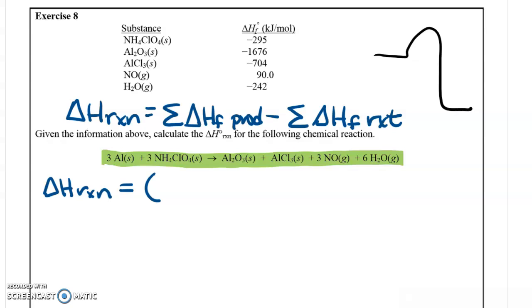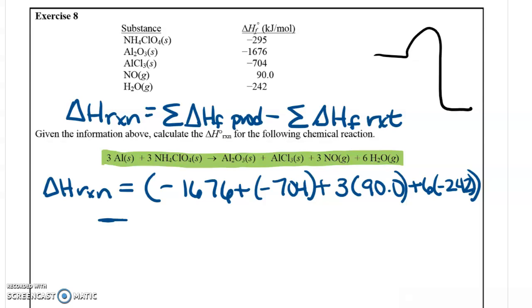We're going to start out with the heat of formation of Al2O3. So that value is negative 1676. We're going to add the AlCl3, which is a negative 704. So I'm just plugging in the numbers from the chart. We're going to add three nitrogen monoxides and that's a positive 90. And we're also going to add that to six waters. So we're going to say six times negative 242. So that's all of my products.